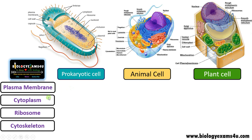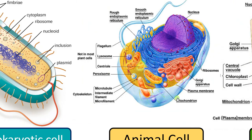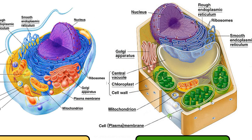The four structures: plasma membrane, cytoplasm, ribosome and cytoskeleton. As you see, plasma membrane in prokaryotic cell is seen inner to the cell wall. It is a selectively permeable membrane made up of phospholipids and proteins that maintains a constant internal environment. In animal cell, plasma membrane is the outermost boundary, as animal cell is devoid of cell wall. In plant cell, just like a prokaryotic cell, plasma membrane is seen inner to the cell wall.